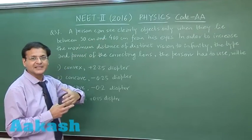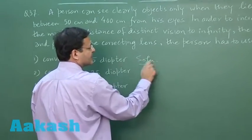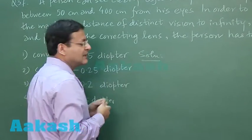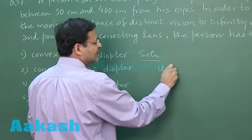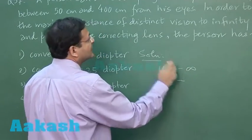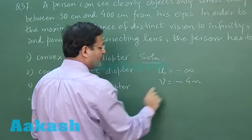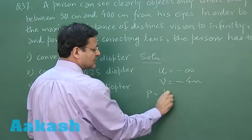So here I am trying to say that he has to see the things at infinity, that means if the object is kept at infinity, its image should be formed at 400 cm, so minus 4 meter you can say. Now power of the lens, that is what is to be calculated.